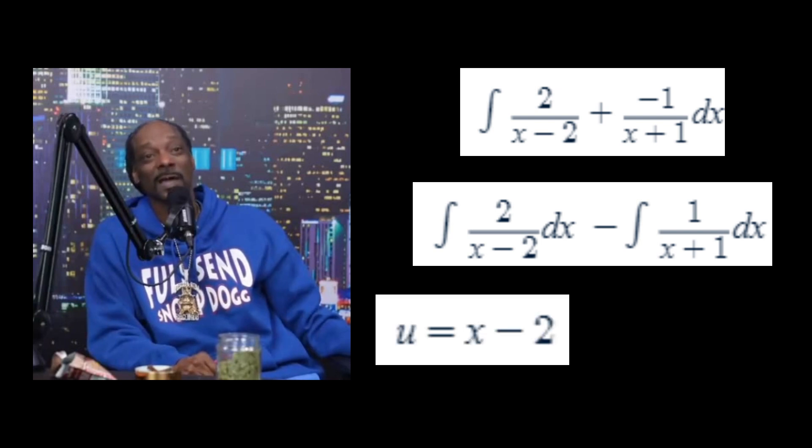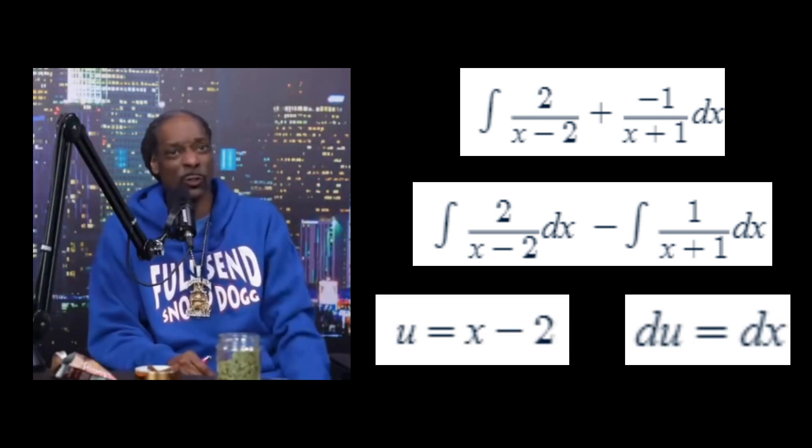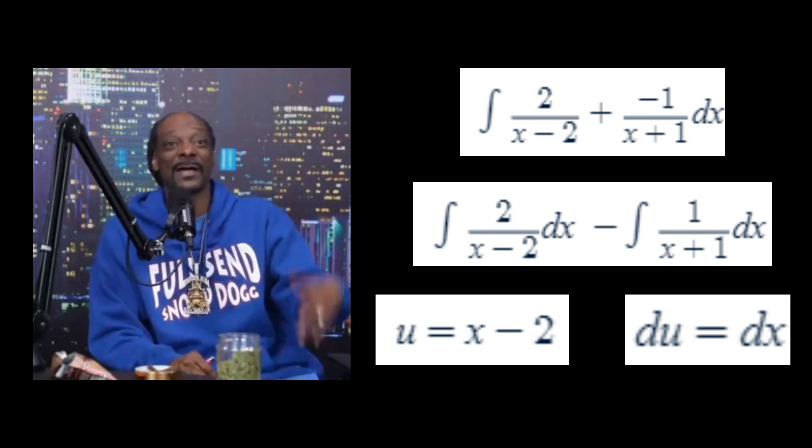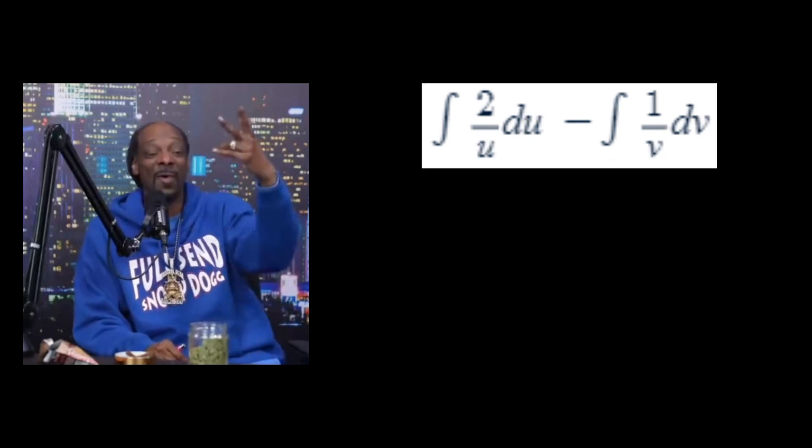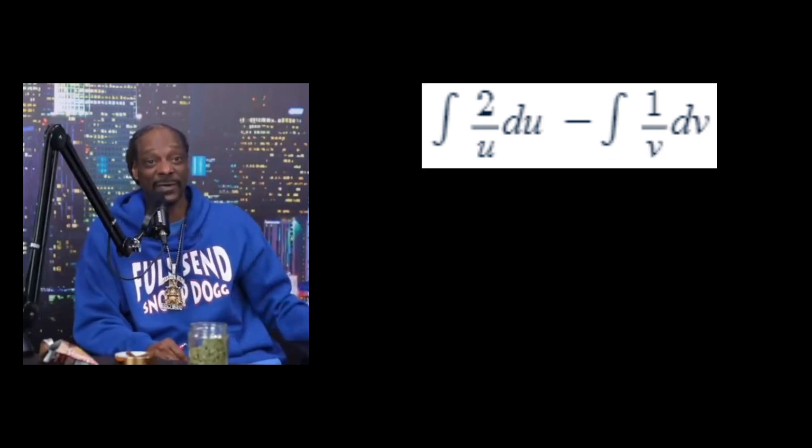Now we can use u-sub. Let's set u equal to x minus 2. We get du equals dx, so the substitution is simple. The same is true for the other fraction. If we sub v for x plus 1, we end up with the expression integral of 2 over u du minus integral of 1 over v dv.